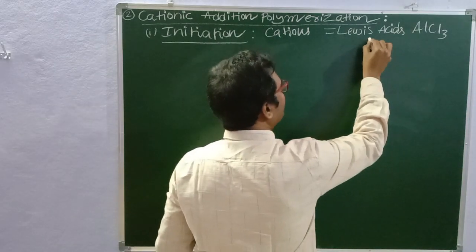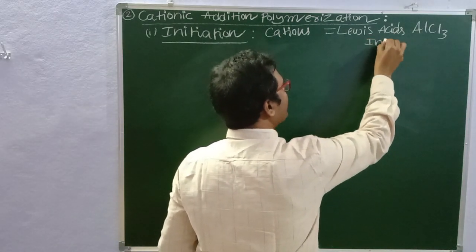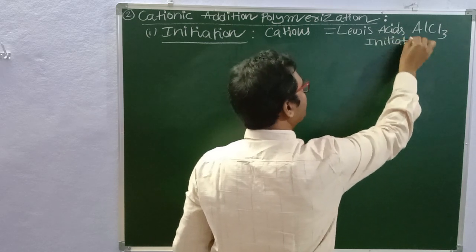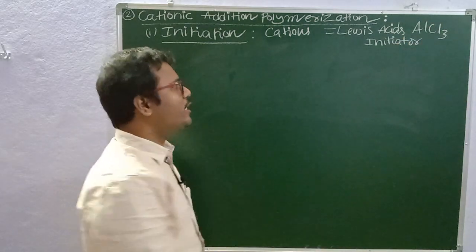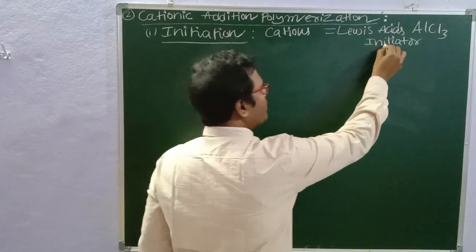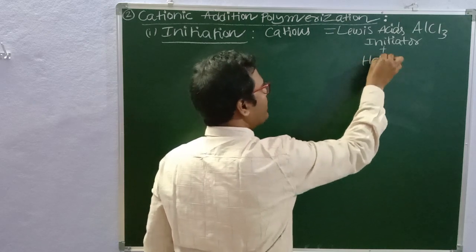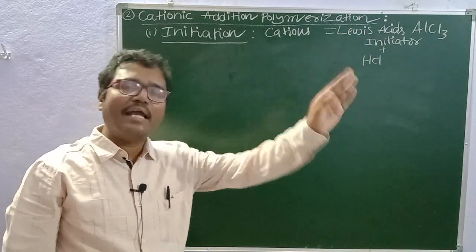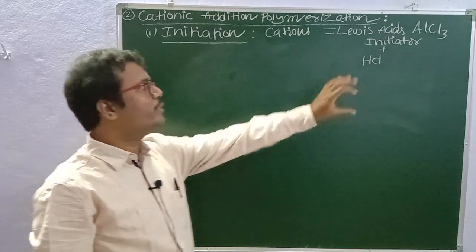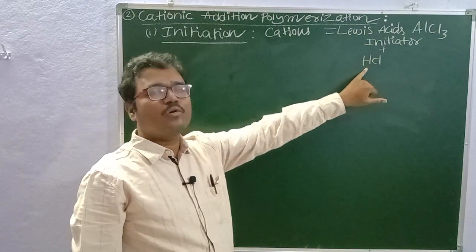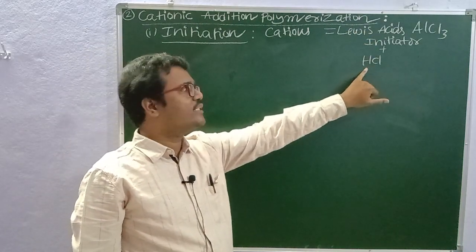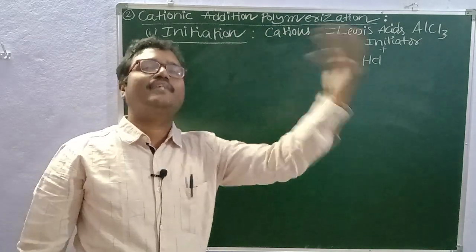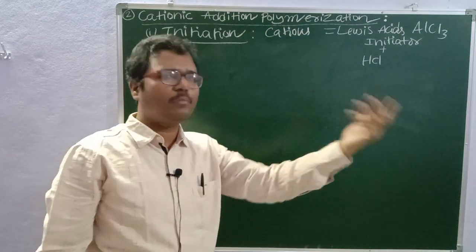Along with the initiator AlCl3, we also need to use HCl — hydrochloric acid. Using AlCl3 and hydrochloric acid together in the initiation step gives positively charged H+ ions, which are nothing but cations.